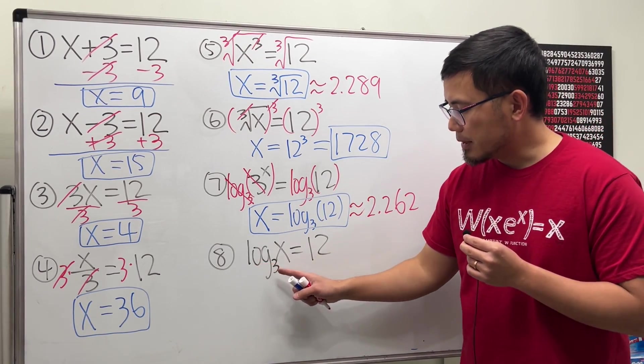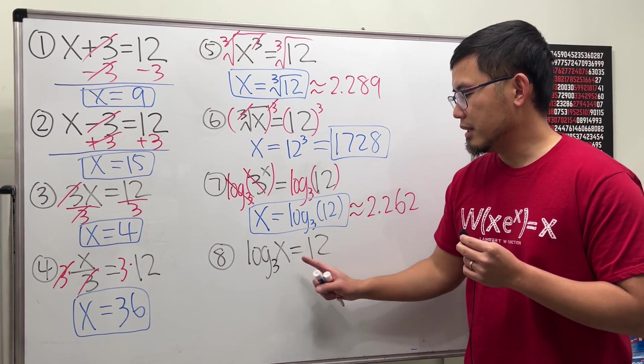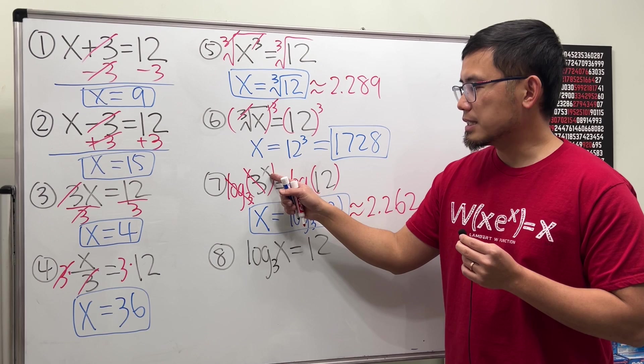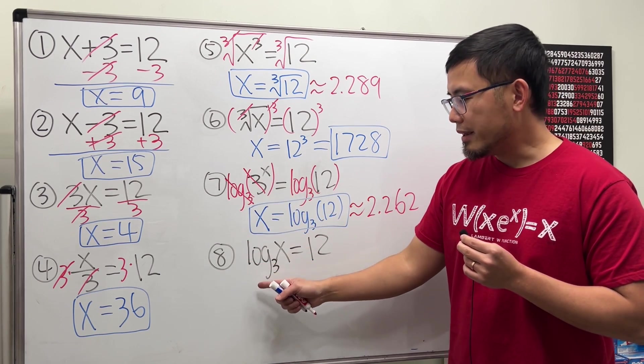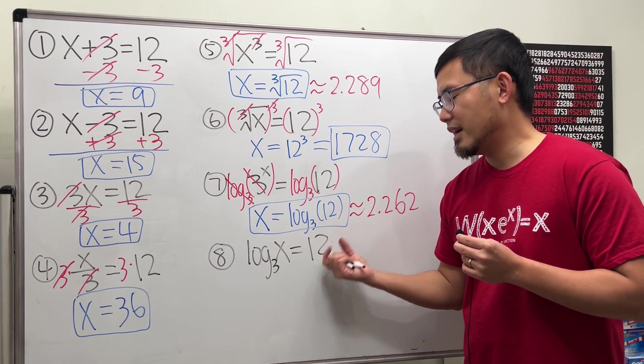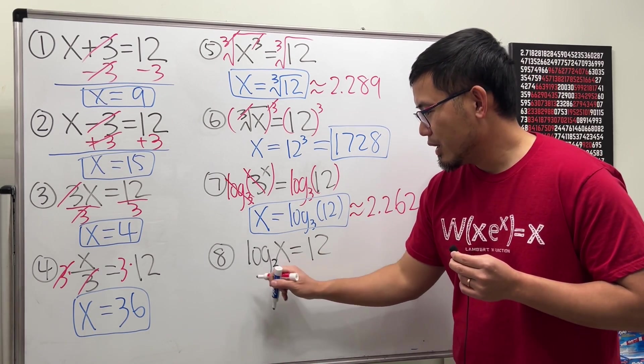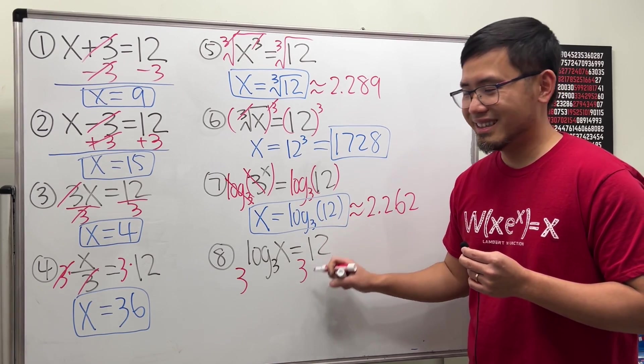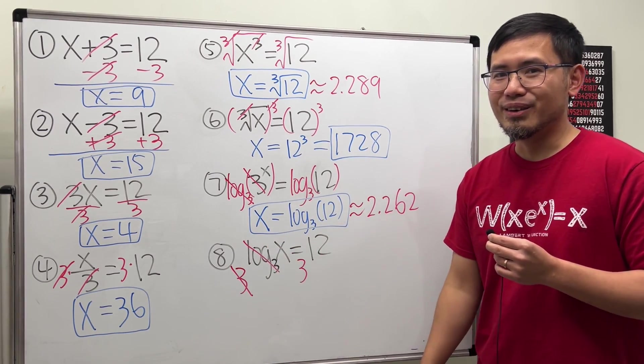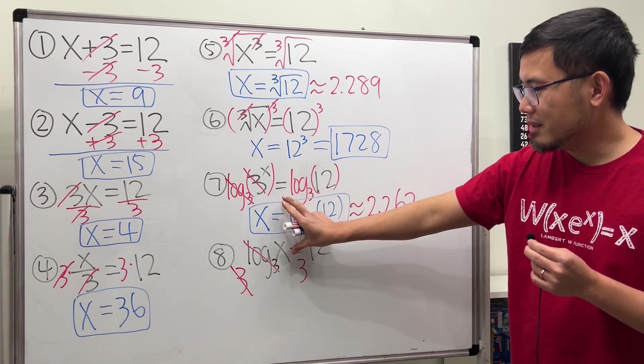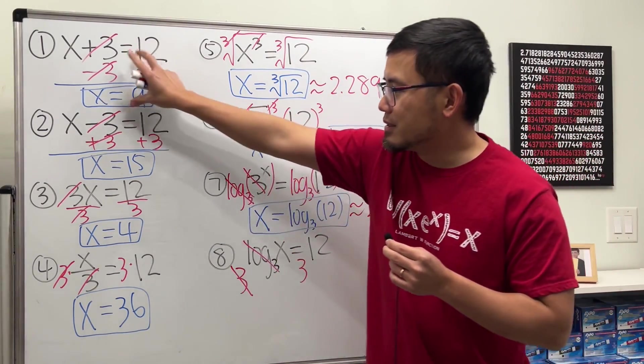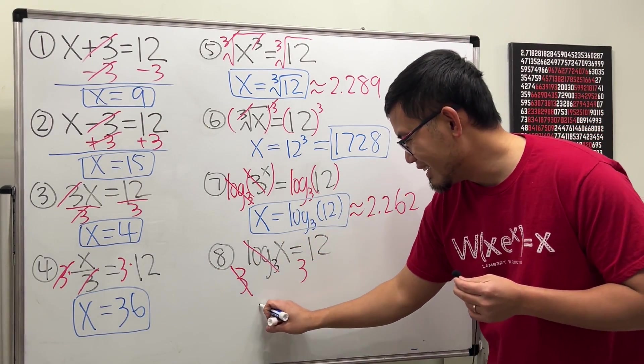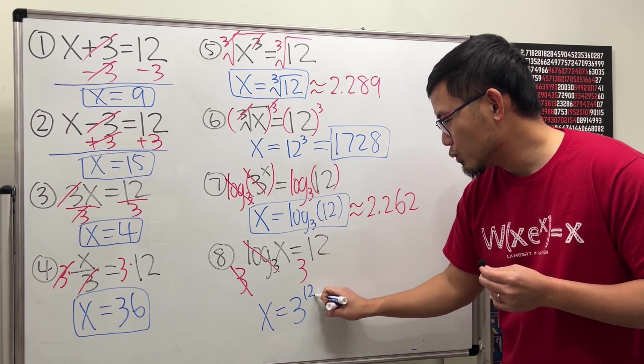And finally, we have log base 3 of x equals 12. x is inside of the logarithm. So in this case, you see earlier, when the x is in the exponent, we do log. Right now, when we have log, we are going to pretend that they are the exponents. So we do the following. We do 3 to this power and 3 to that power. This and that can also cancel. In fact, these two are the inverse operations. Like these two, this two, and this two. That's a setup for this video.